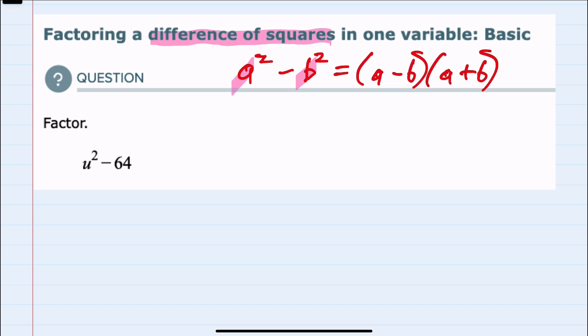So the first part is already in that form. It is a u being squared. But then the minus 64, I want to write that as something squared. And here since 64 is a perfect square, it is 8 squared.